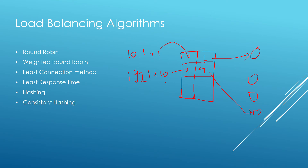The next algorithm is consistent hashing. I won't go into deeper detail here because I've already explained it in my system design video on distributed cache — you can check that video for a full explanation. The same algorithm applies here for load balancing. Essentially it works like a ring, so if one server goes down you just route it back to the next server on the ring.